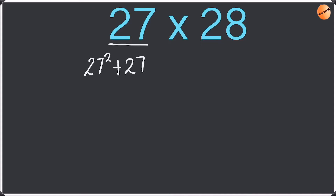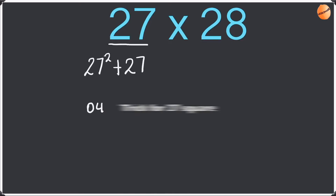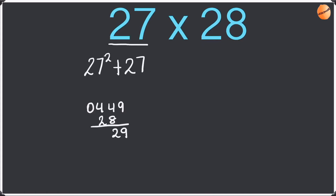So first we have to work out 27 squared. So 27 squared is 729.